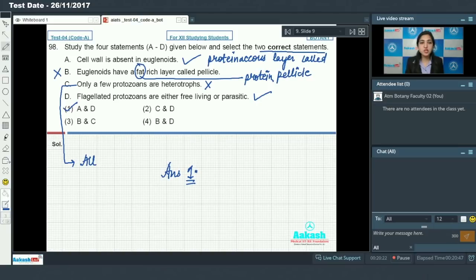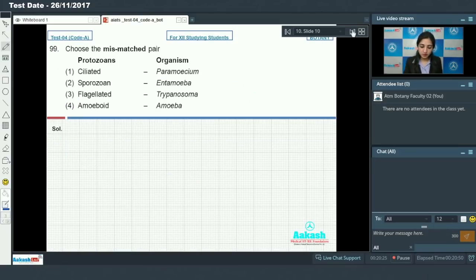Moving on to the next question, that is question number 99. Choose the mismatched pair. On the left hand side you are given with different types of protozoans and on the right hand side you are given with the organisms. So now you have to identify the mismatched pair.